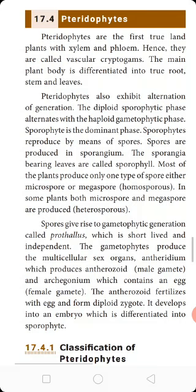In the pteridophytes plants, the first example is fern plants. These plants are having xylem and phloem, which are called vascular bundles. But these plants do not produce flowers, so they are called vascular cryptogams.